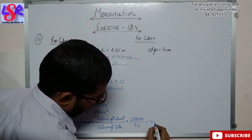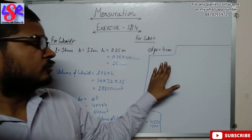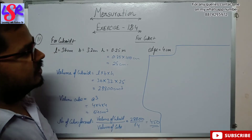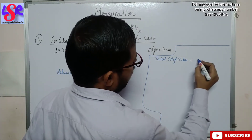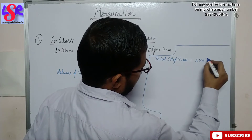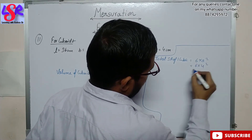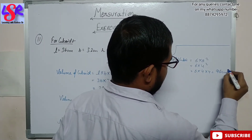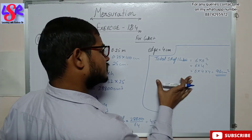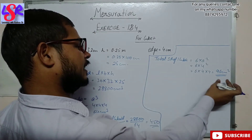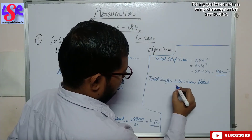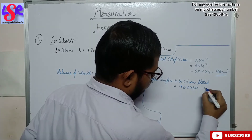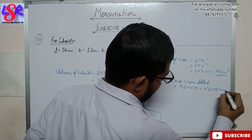Solving this we get 450 cubes. Then we find the total surface area of one cube: 6 × a² = 6 × 4² = 6 × 16 = 96 square centimeter. The total surface area to be silver plated is 96 × 450 = 43200 square centimeter.